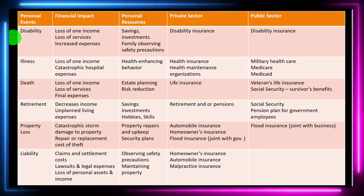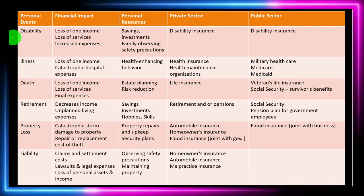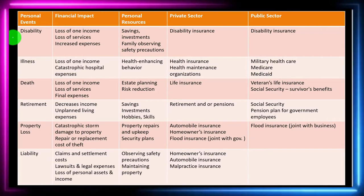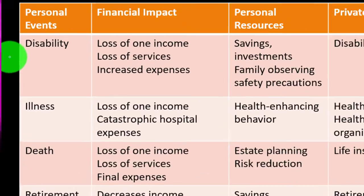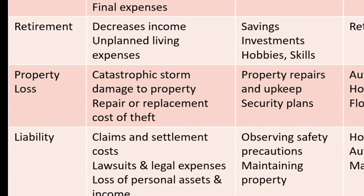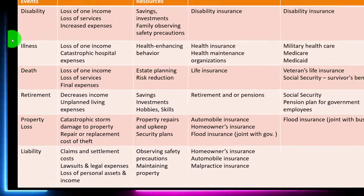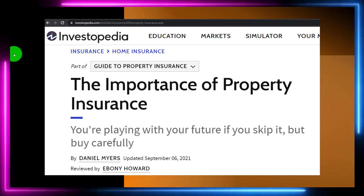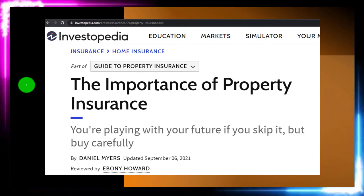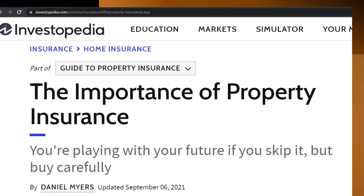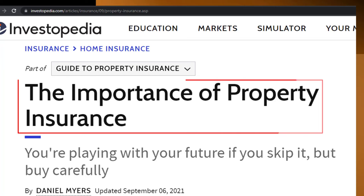The types of events for insurance that we might have include disability, illness, death, retirement, property loss, and liability. Here's our chart that we saw in prior presentations. We're focusing this time on the importance of property insurance.